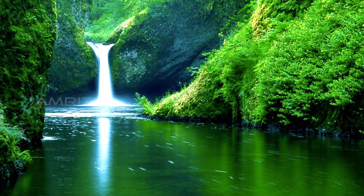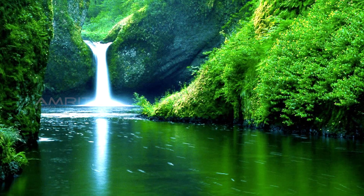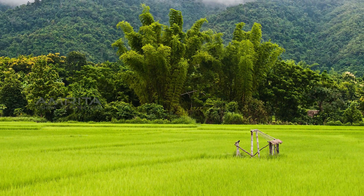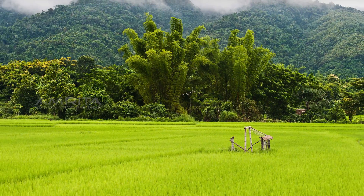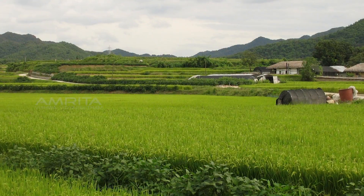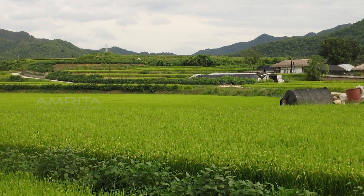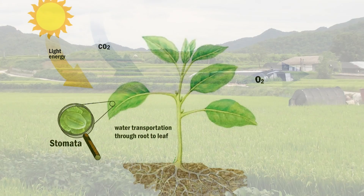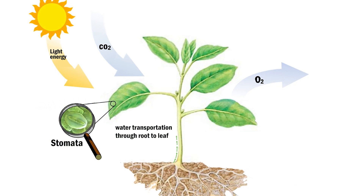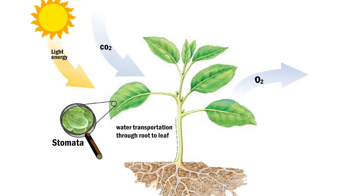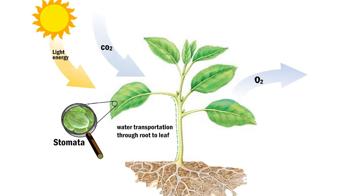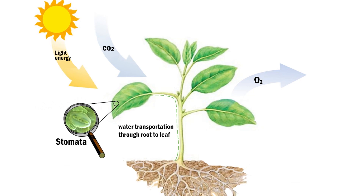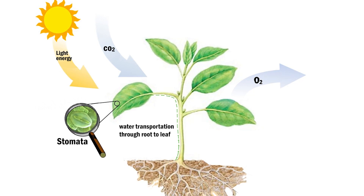Water is the most important constituent of plants and is essential for the maintenance of life, growth and development. Transportation of water into and through a plant takes place by different processes like osmosis and diffusion.